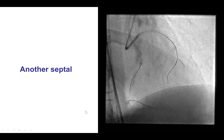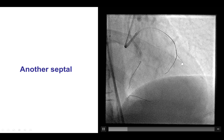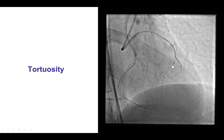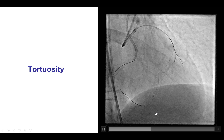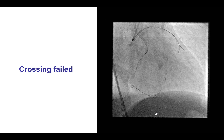After multiple failed attempts, we decided to try to cross through another septal — the third septal. The wire went through, but it was very challenging. Surfing failed. An injection demonstrated significant tortuosity, and it appeared that septal may enter the same area of the PDA as the previous septal. So we eventually decided to abandon this and try a more distal septal collateral.